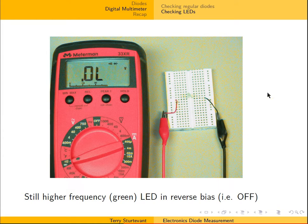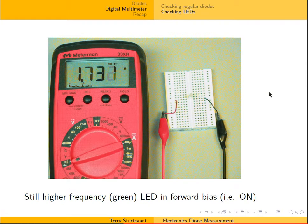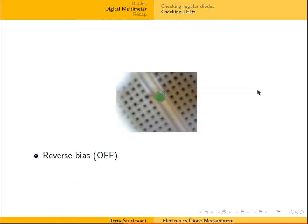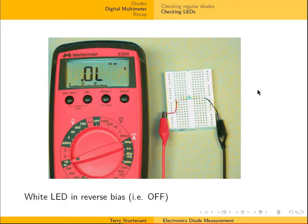Now with a green LED, which is a higher frequency than yellow or red, we see again reverse bias. In forward bias, notice that the voltage is a little higher than it was for the red LED, because of the higher energy needed to turn on the green LED. Again, in reverse bias it's off; in forward bias we can see that it's on.